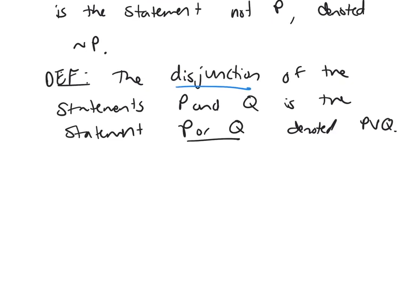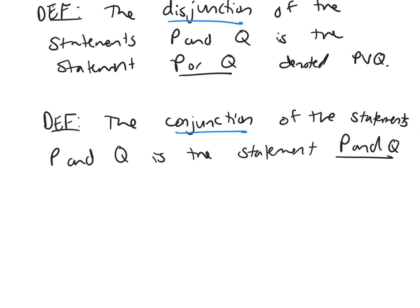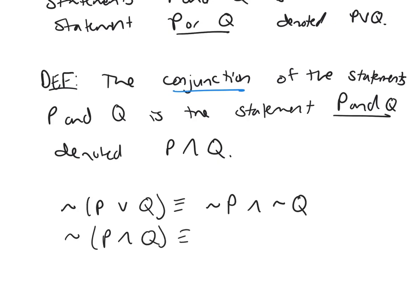We also have the conjunction of statements p and q, which is the statement 'p and q,' denoted p ∧ q. Remember that when you negate these statements, the connectives flip: the negation of 'p or q' becomes 'not p and not q,' and vice versa — if I negate 'p and q,' it becomes an 'or' statement. This is De Morgan's law.